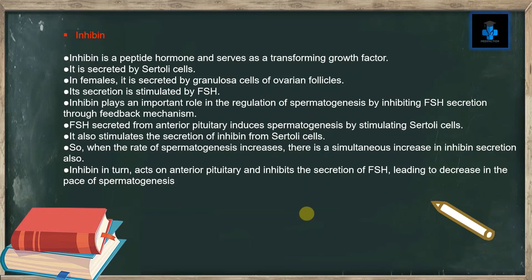Follicle stimulating hormone secreted from the anterior pituitary induces spermatogenesis by stimulating the Sertoli cells. It also stimulates the secretion of inhibin from Sertoli cells. When the rate of spermatogenesis increases, there is a simultaneous increase in inhibin secretion. Inhibin in turn acts on the anterior pituitary and inhibits the secretion of FSH, leading to a decrease in the pace of spermatogenesis.